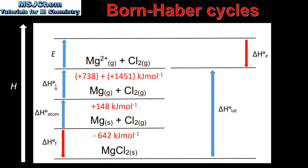Next we have the first and second ionization energy of magnesium. This is because magnesium forms 2+ ions, so we need to include both the first and second ionization energy. In this step we go from one mole of gaseous magnesium atoms to one mole of gaseous magnesium 2+ ions.